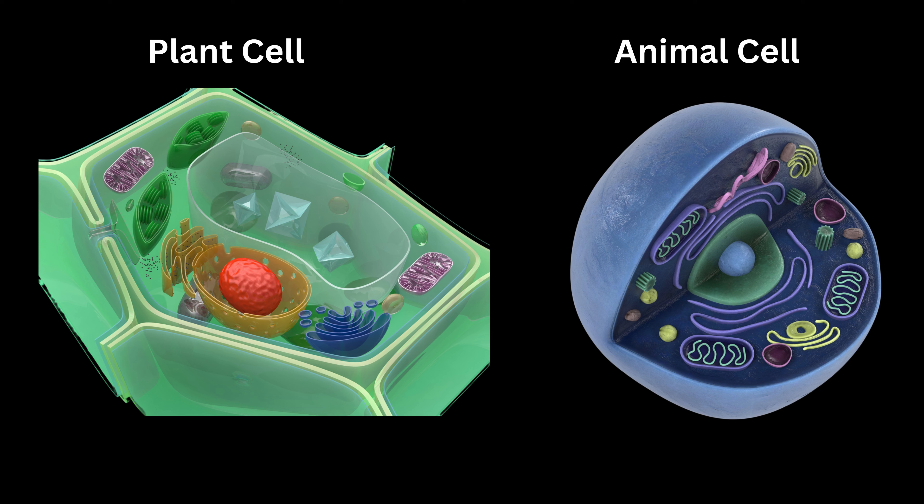Lesson 2: Understanding Cells and Their Functions. Cells are the basic units of life, making up all living organisms. In this lesson, students will learn about the different structures within a cell, such as the nucleus, cell membrane, and cytoplasm, each performing vital functions. We also compare plant and animal cells, noting the unique presence of a cell wall and chloroplasts in plant cells.